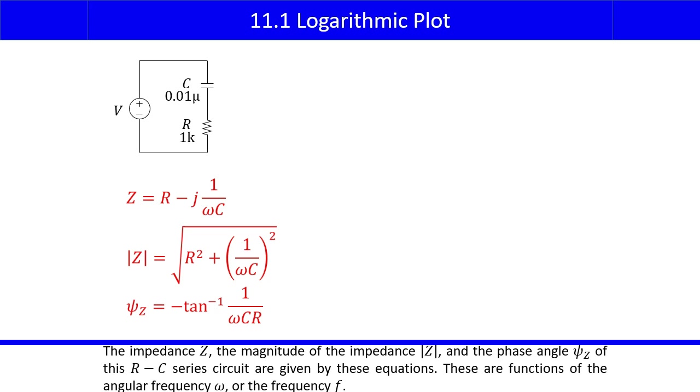The impedance Z, the magnitude of the impedance Z, and the phase angle psi Z of this RC series circuit are given by these equations. These are functions of the angular frequency omega, or the frequency f.